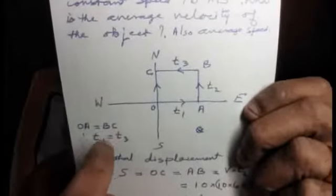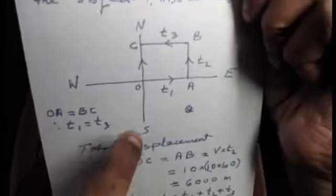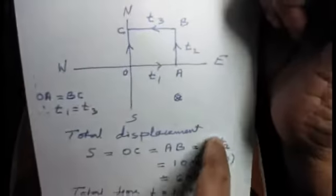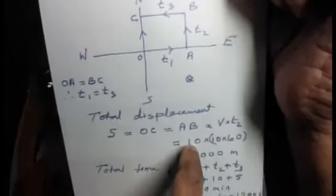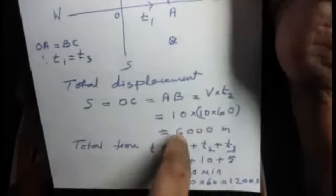Since T1 equals T3 and speed is constant, the eastward distance OA equals the westward distance BC. Therefore they cancel out, and the total displacement S equals OC, which equals AB. AB equals velocity into T2, that is 10 meters per second into 10 minutes, which is 10 into 60 equals 6000 meters northward.